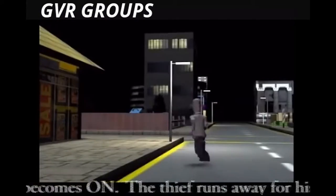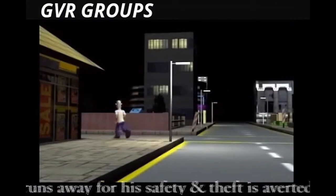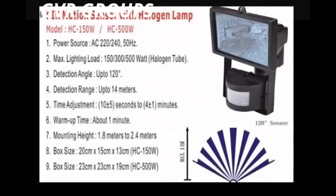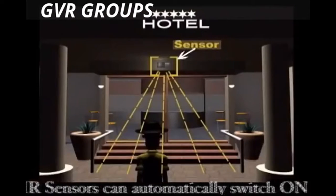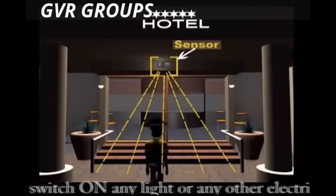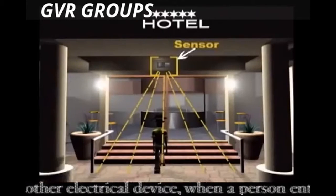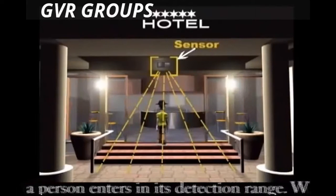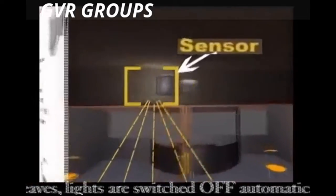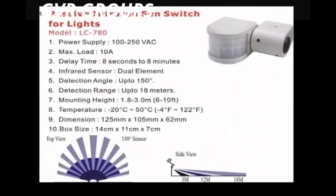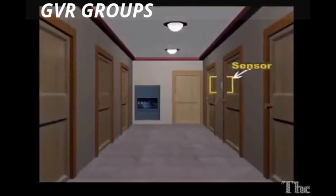PIR sensors can automatically switch on any light or any other electrical device when a person enters their detection range. When the person leaves, the lights are switched off automatically.